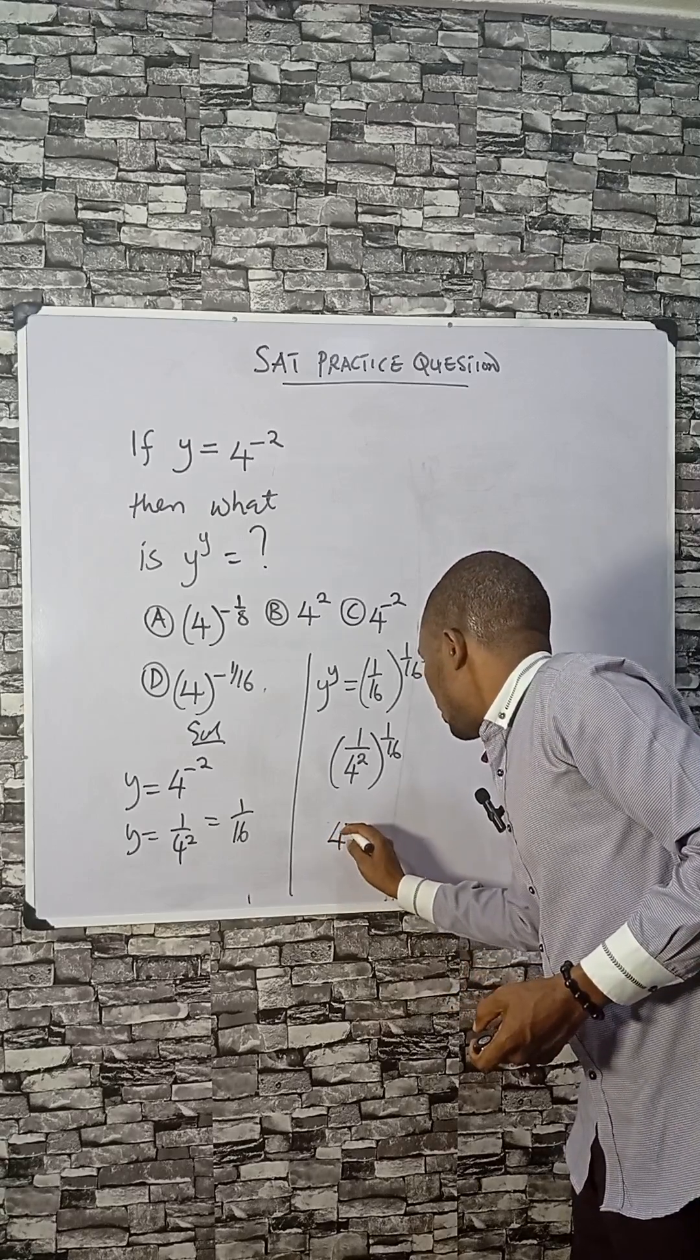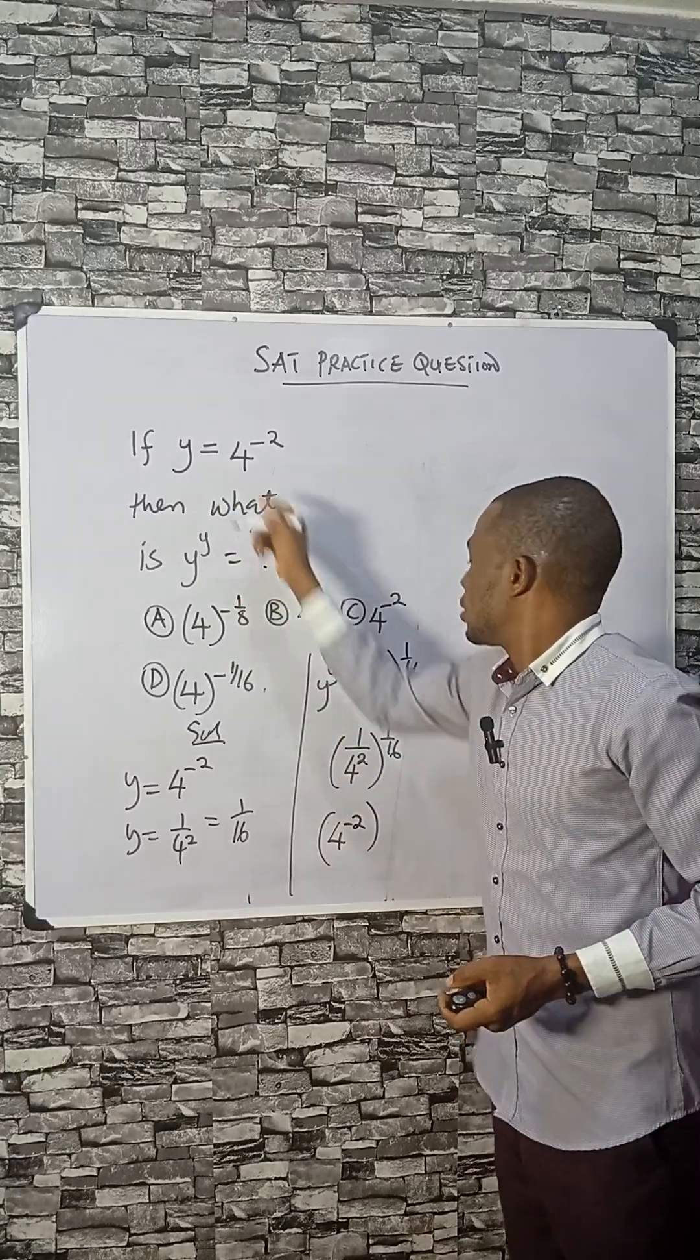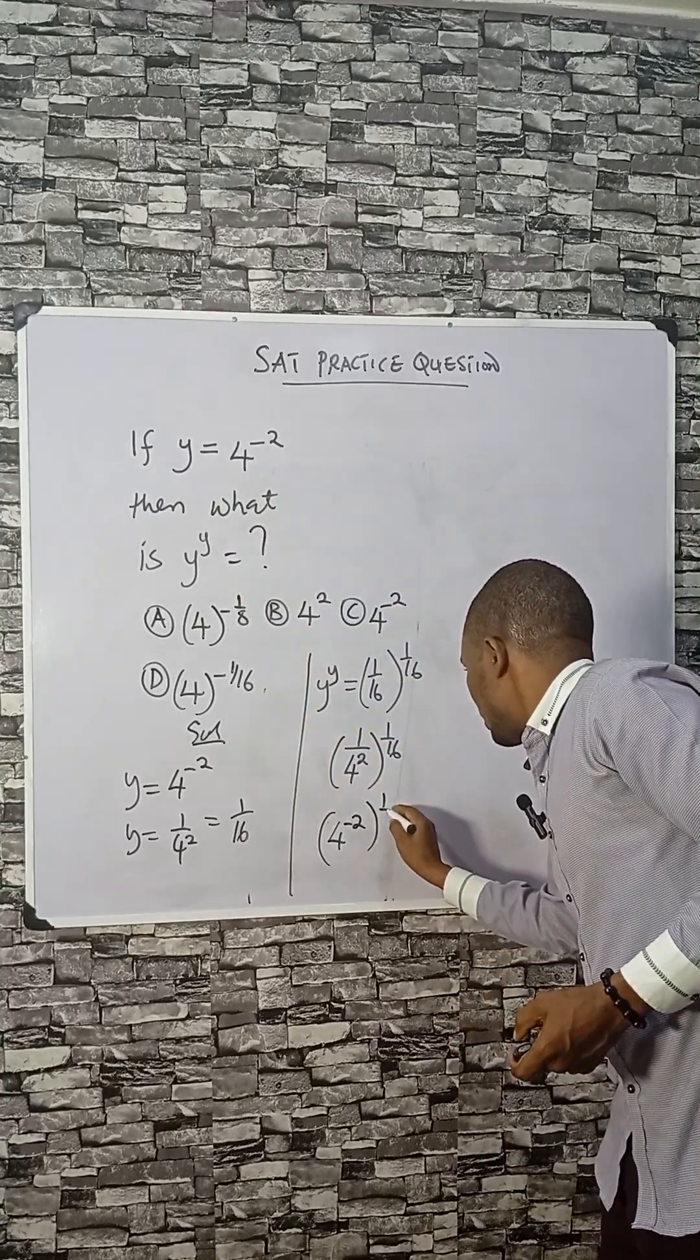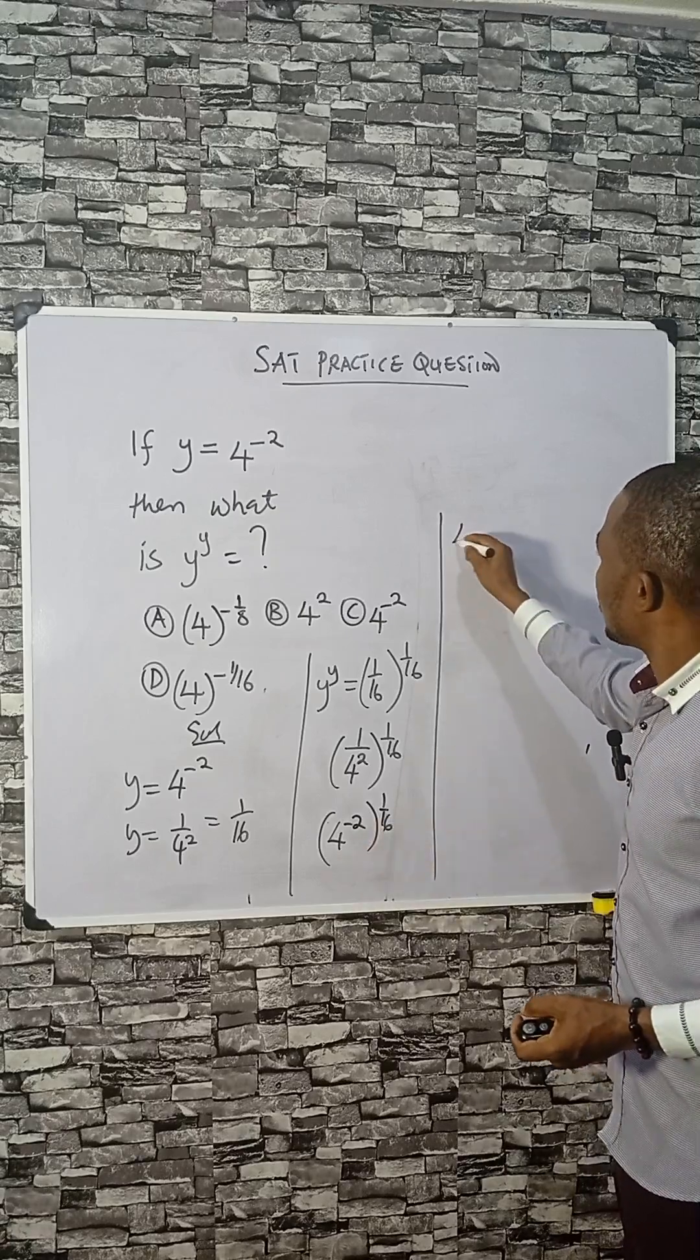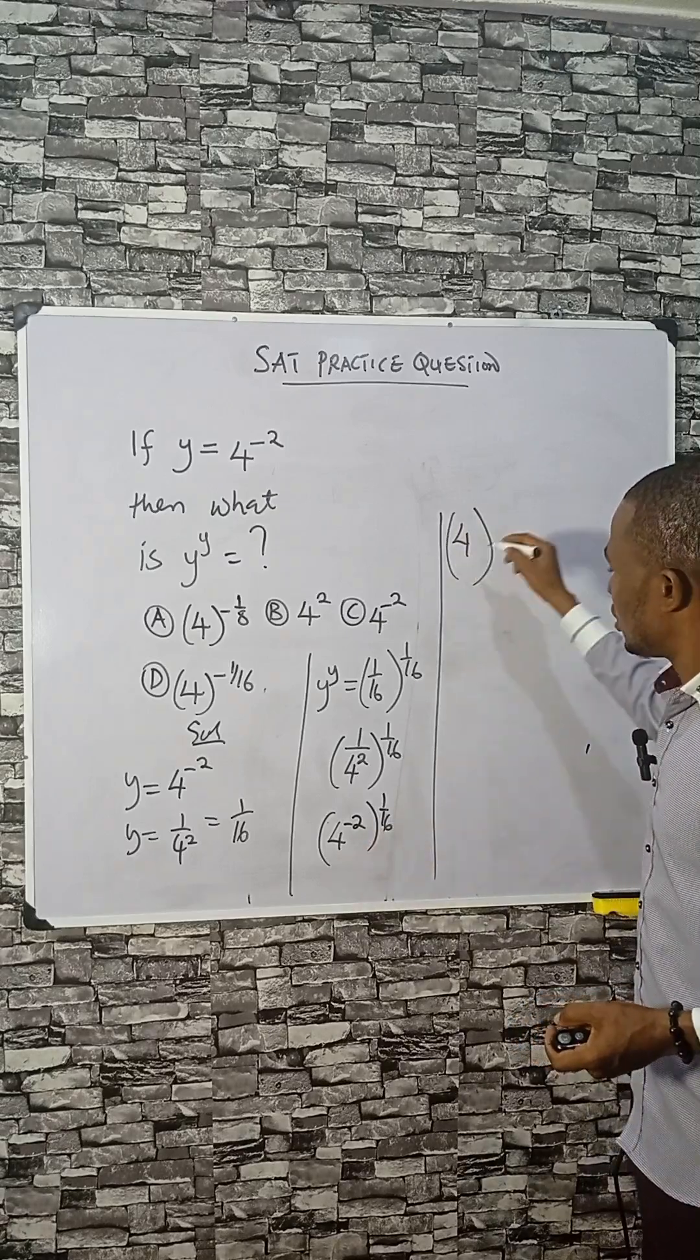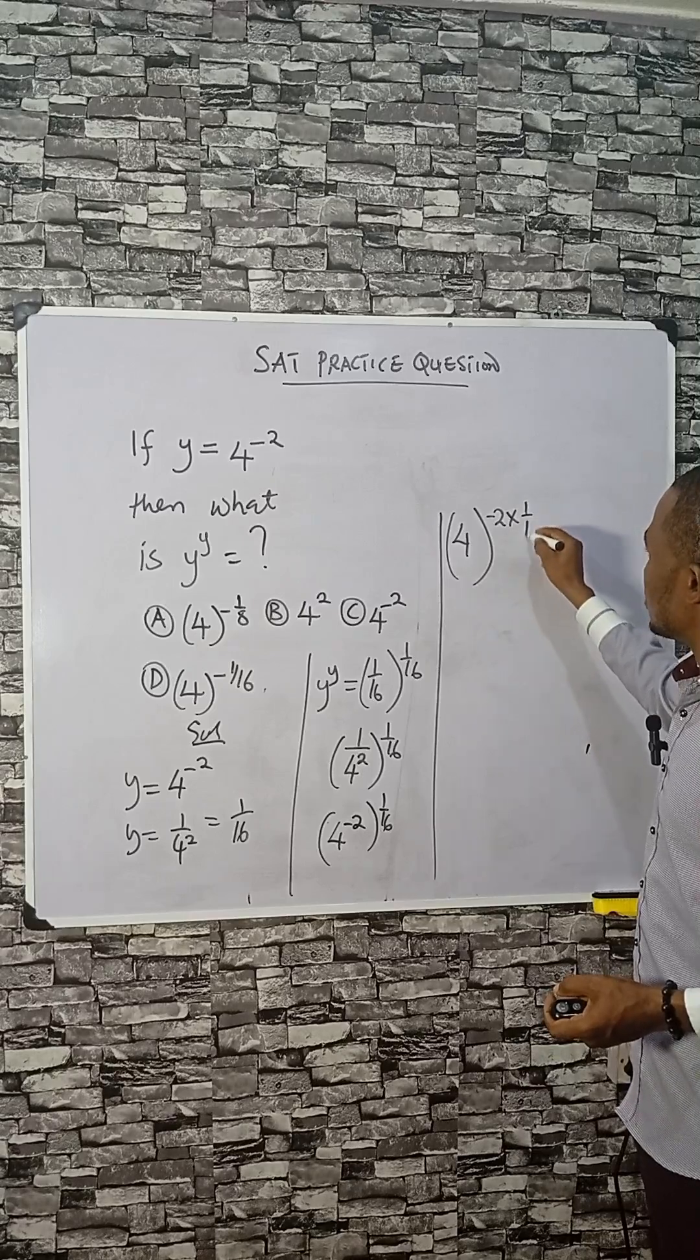We can write this as 4 raised to the power minus 2, just like what we had here, then 1 over 16. So it's time for the powers to multiply. So you can have 4 written quickly: minus 2 multiplying 1 over 16.